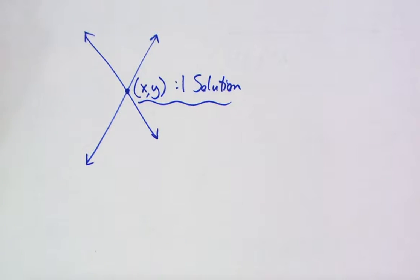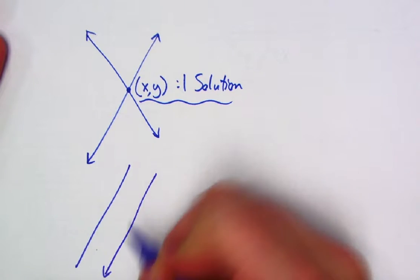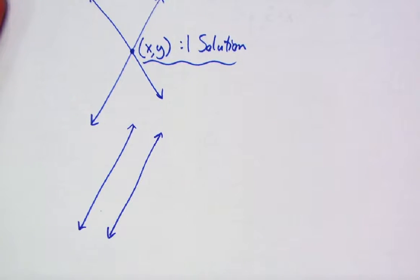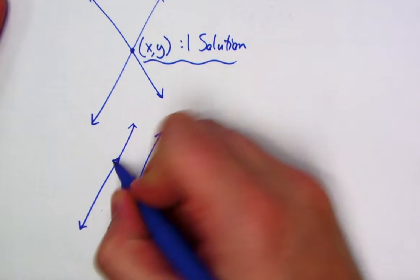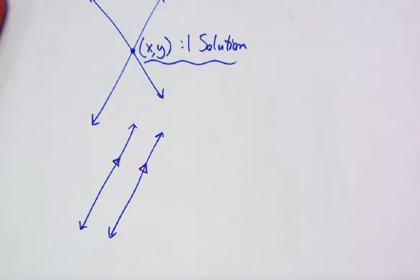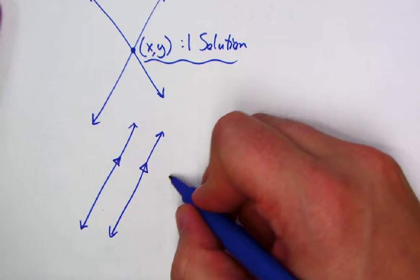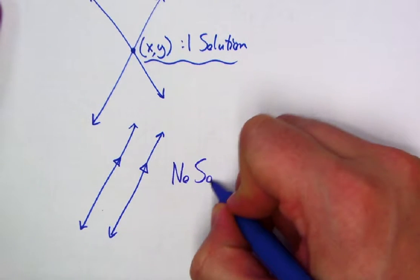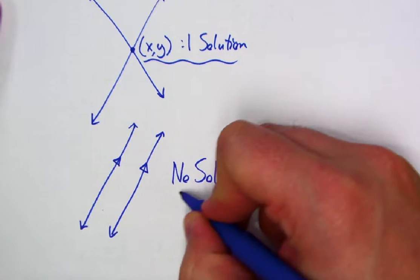Alternatively, you could of course imagine the two of those maybe being parallel. Maybe you've got these two, but they're never actually going to cross. We'll use that parallel notation that we had talked about back in geometry, and of course this is an example where you're going to have no solutions.